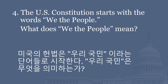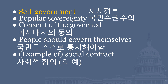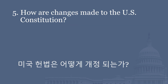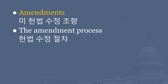The U.S. Constitution starts with the words 'We the People.' What does 'We the People' mean? Self-government. Popular sovereignty. Consent of the governed. People should govern themselves. Example of social contract. How are changes made to the U.S. Constitution? Amendments. The amendment process.